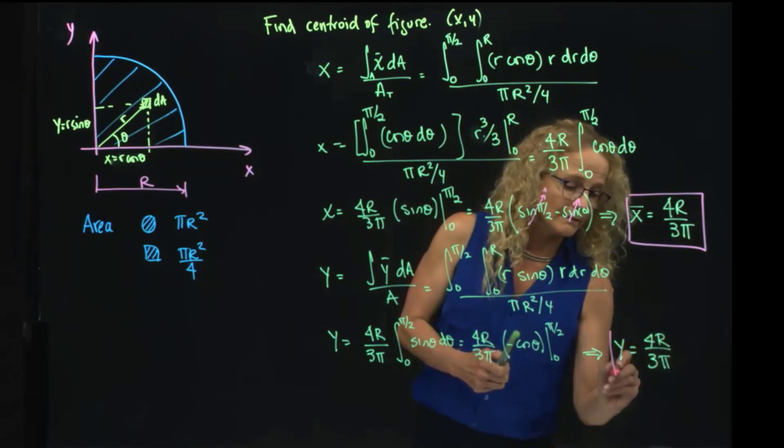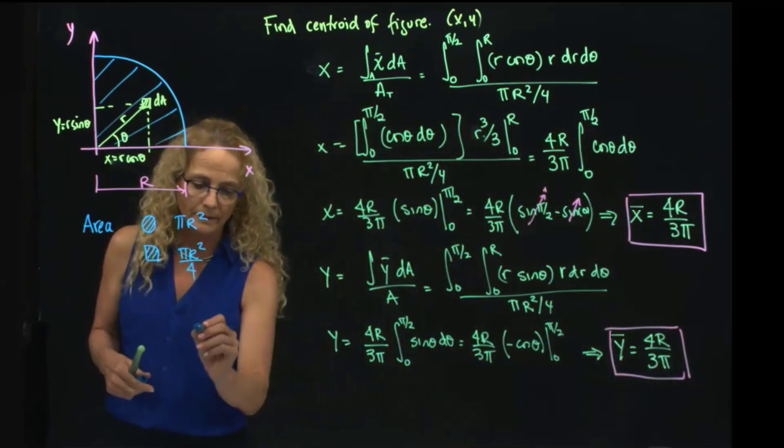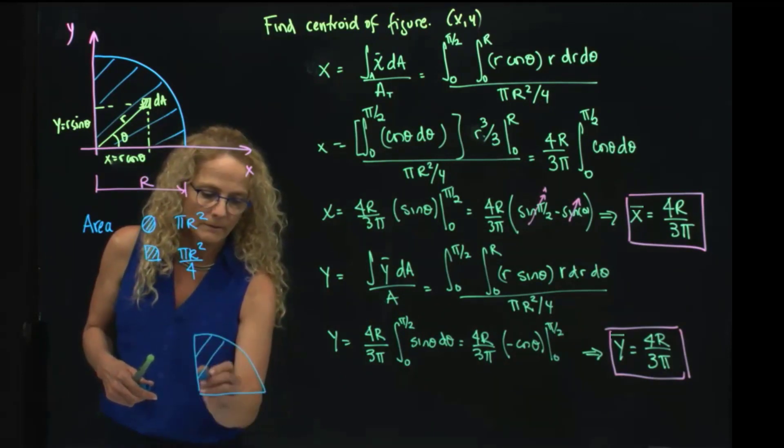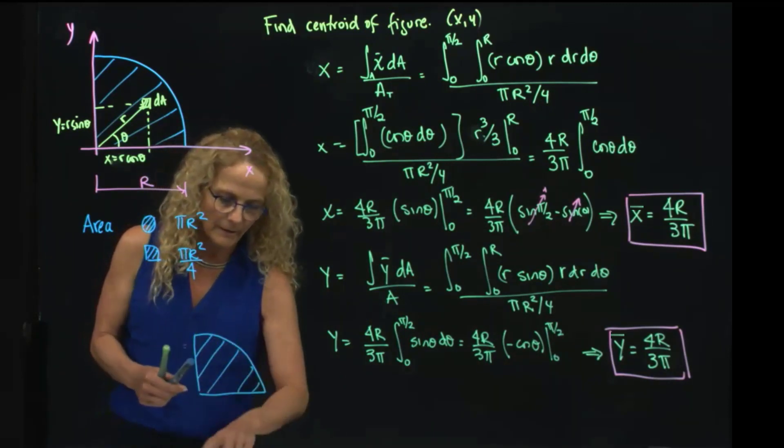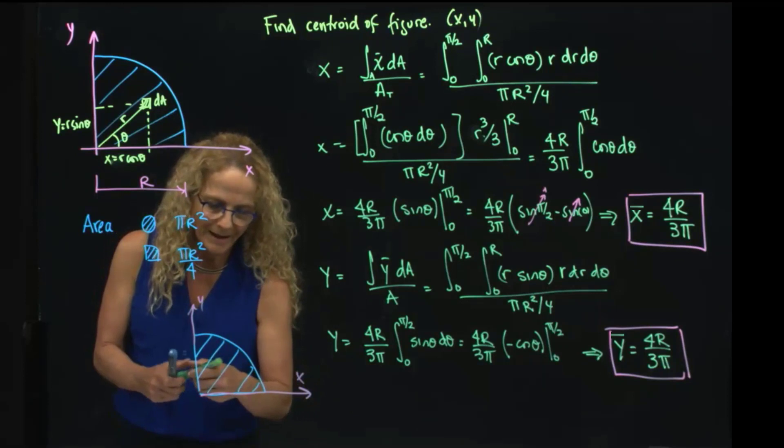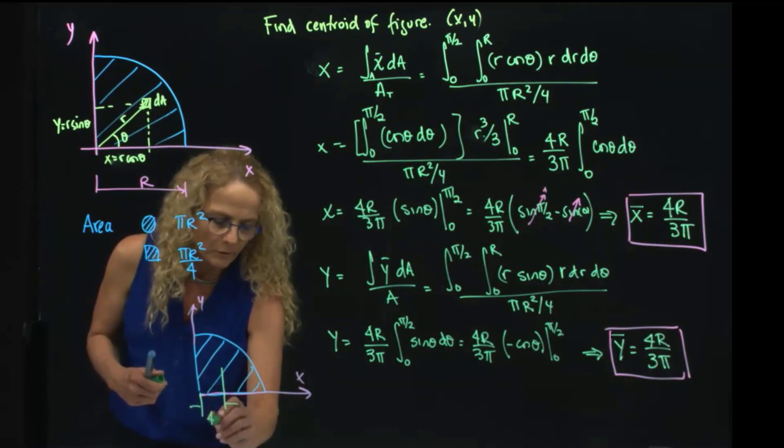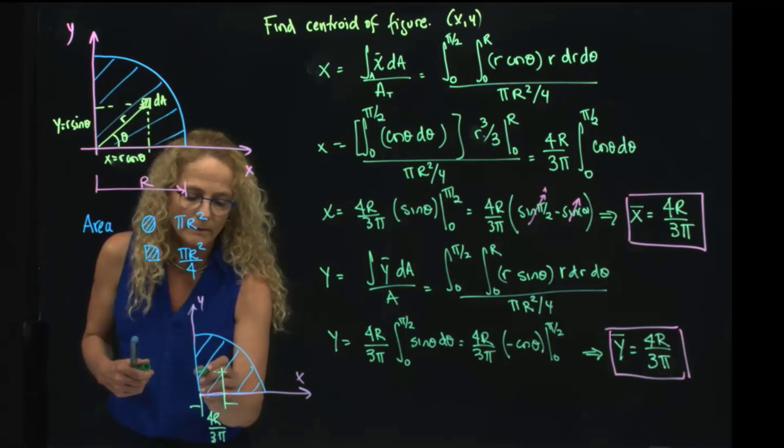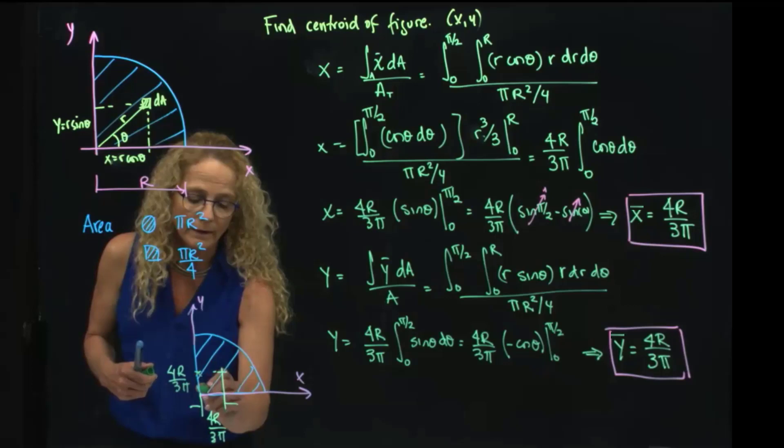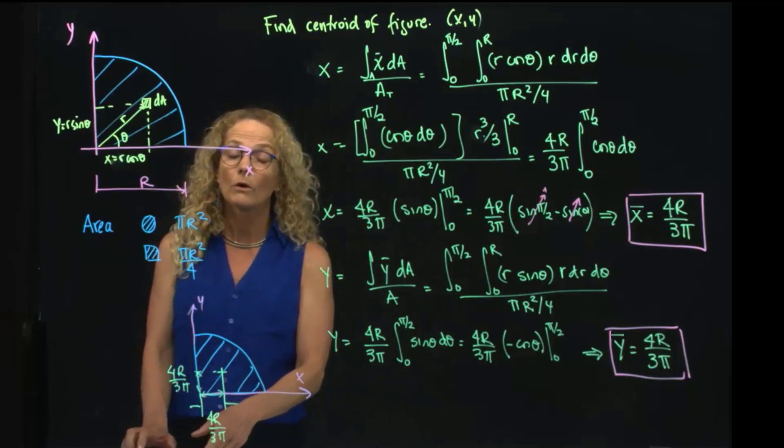What that means is that for a plate like that, if I draw my plate again right here, this is x and this is y, my centroid of that plate will be located at 4r over 3 pi in x, and also in y. This value you will be able to find it in the tables for centroid, but it's very important that you know where that value comes from.